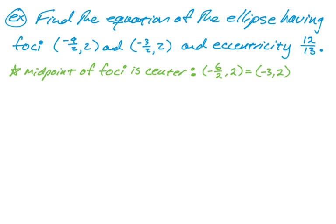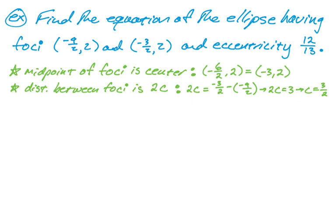The next thing we need to do is we're going to use the given information. We know the foci, so the distance between the foci is 2 times c because the distance from the center to a focus is c. So we could find this in either way. I'm going to just do 2c. So the distance between the foci is 2c. So if I find the distance between these, 2c is going to be negative 3 halves minus negative 9 halves. And then negative 3 halves minus negative 9 halves is negative 3 halves plus 9 halves is 6 halves is 3. So 2c is equal to 3, which means that c is 3 halves. We know c.